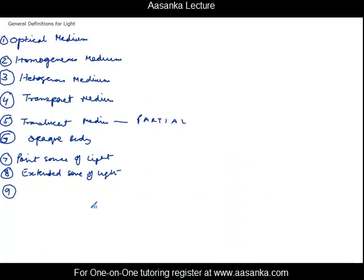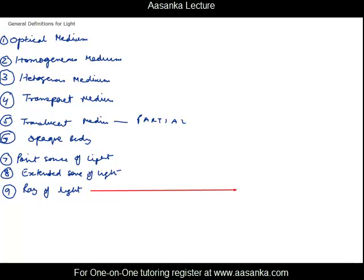Next is the commonly used term ray of light. By definition, it is the path on which we assume the light to be traveling. For example, if you assume light to be traveling in a particular direction, that path is called a ray.